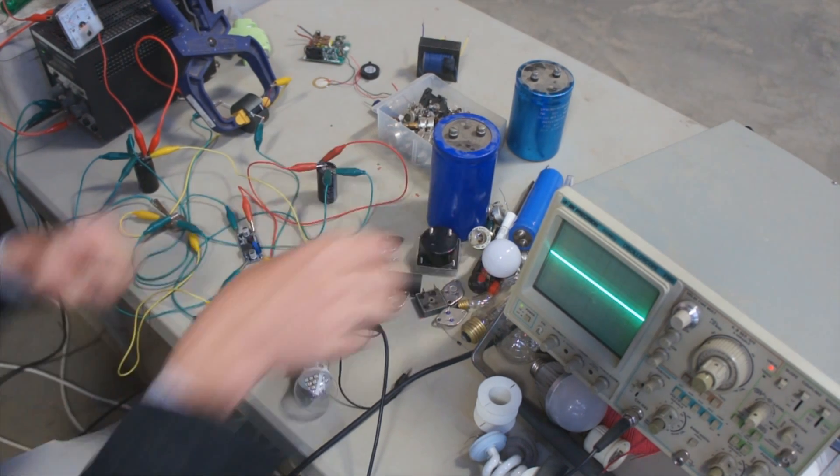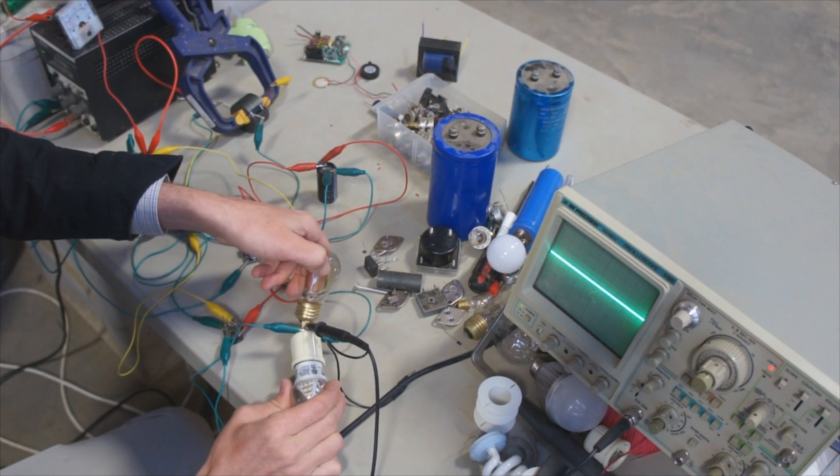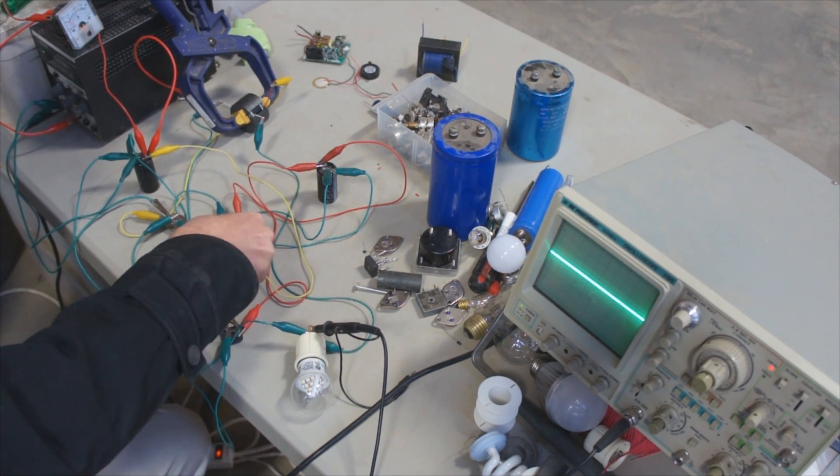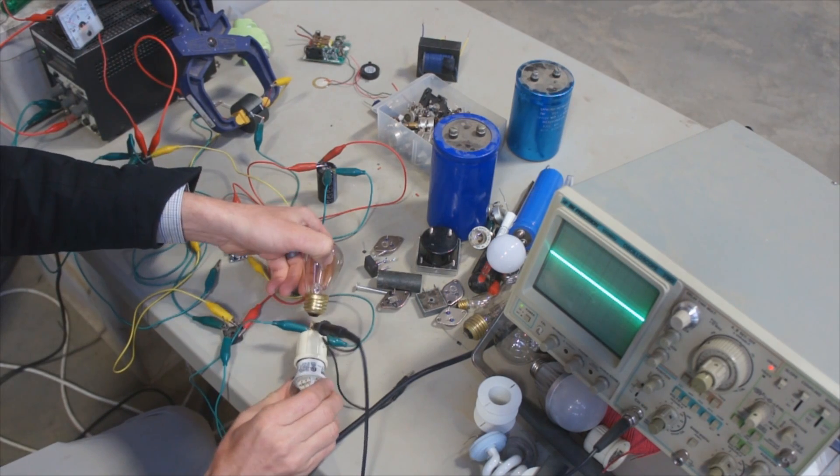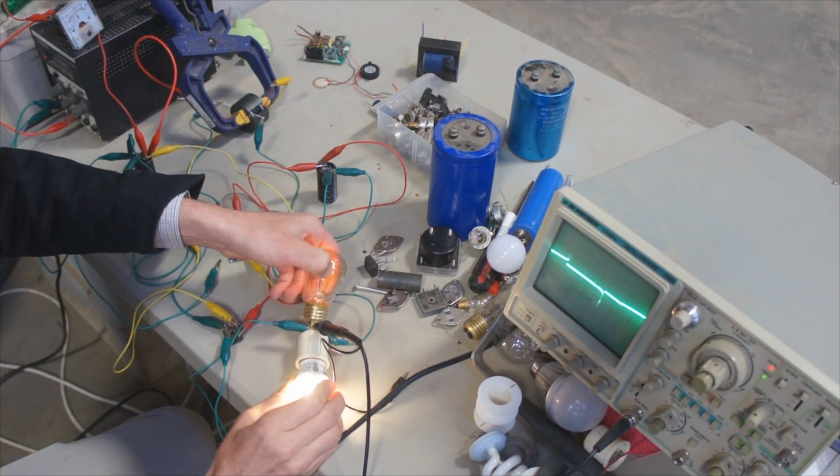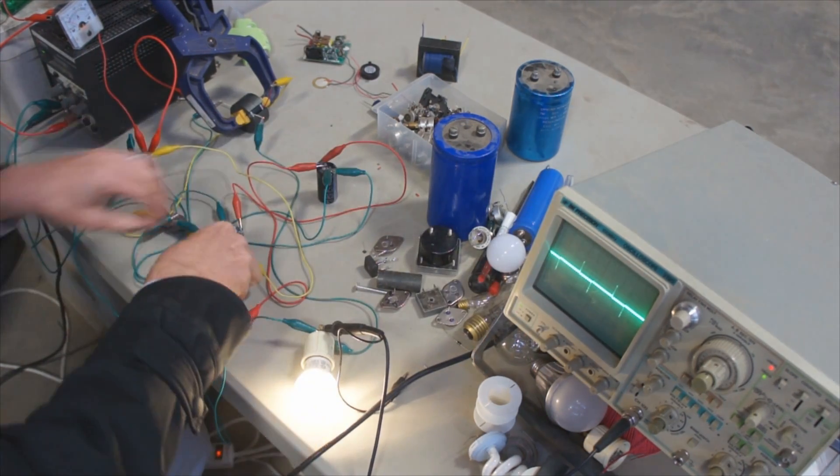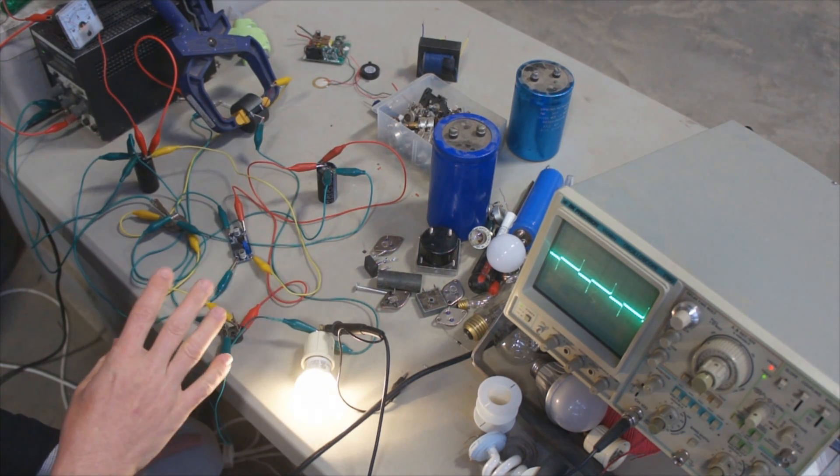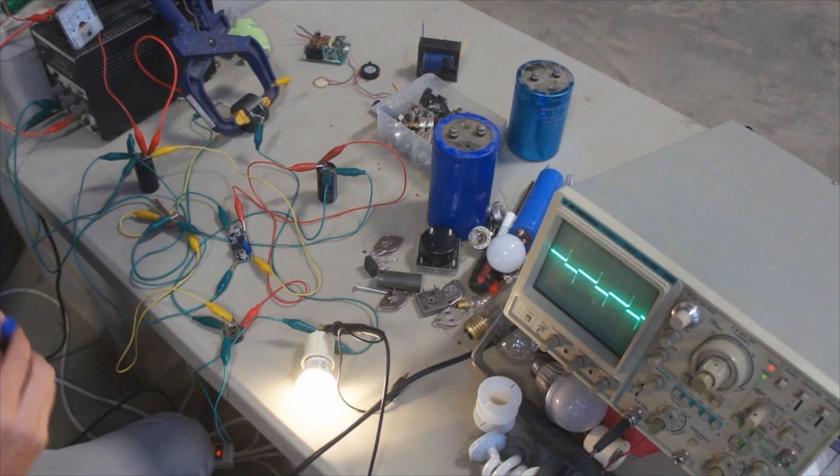Sometimes it's hard to start the circuit again if it's in the looped mode, like you see there. So in order to get it to start, I have to disconnect the loop portion of the circuit and start it up again.